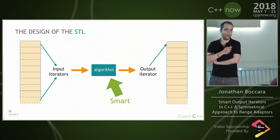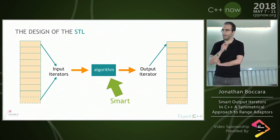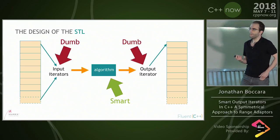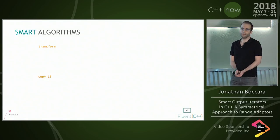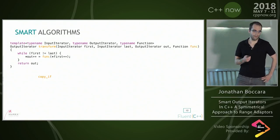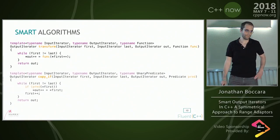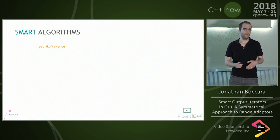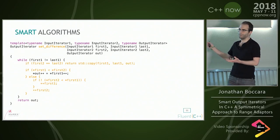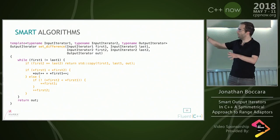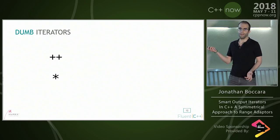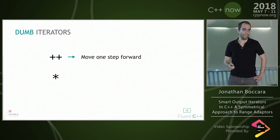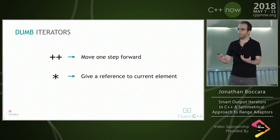In the STL, all the logic is concentrated in the algorithm, in the function. The algorithm is smart and the iterators are dumb. What's smart in an algorithm is that it carries the logic — it can be like applying a function with transform, or checking for a predicate with copy_if, or doing something more complicated like set_difference. What's in orange is the logic, and the rest is just talking with the input and output iterators.